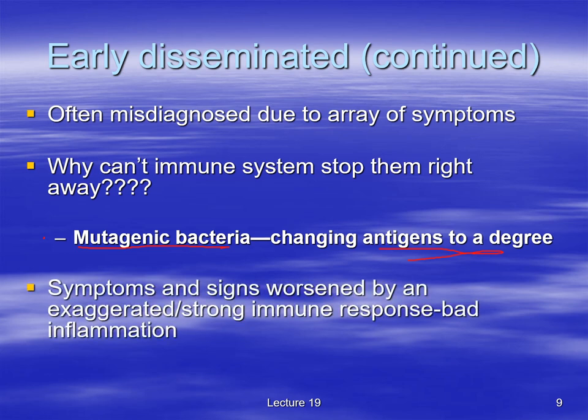The symptoms and signs are often worsened because the immune system is working so hard. It's an exaggerated immune response that can damage tissue more than the bacteria — causing bad inflammation as the body overdoes it trying to kill the bacteria, ending up damaging the tissues. That's another reason the symptoms can be pretty bad.